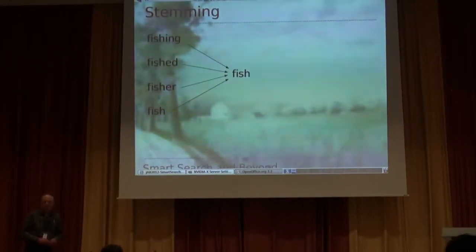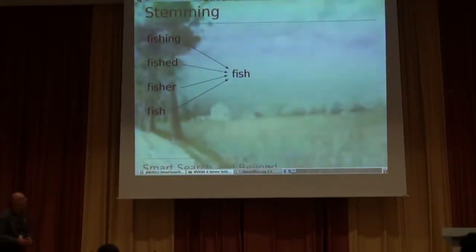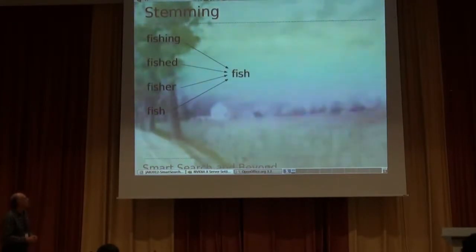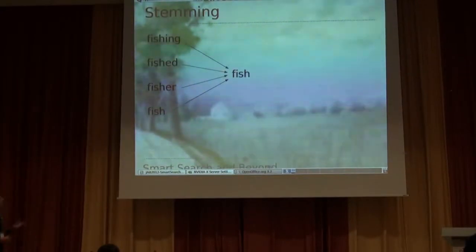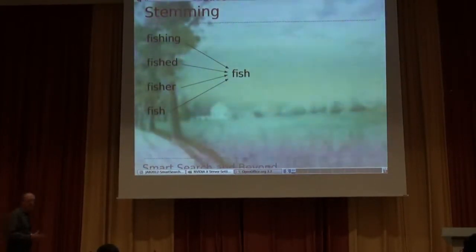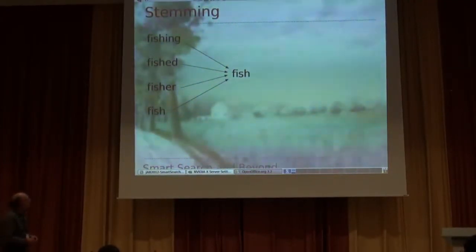Then comes the interesting process of stemming. Basically, it's stripping a word down to a root word and then putting that into the terms index as well. So, for example, somebody searching on the word 'fishing' is also going to get search results which might contain the word 'fished.' So again, it improves the quality of the search results. Google is very, very good at this — Google introduced stemming in 2003 onto their search system. Smart Search does it as well, not as good as Google perhaps, but it does it.